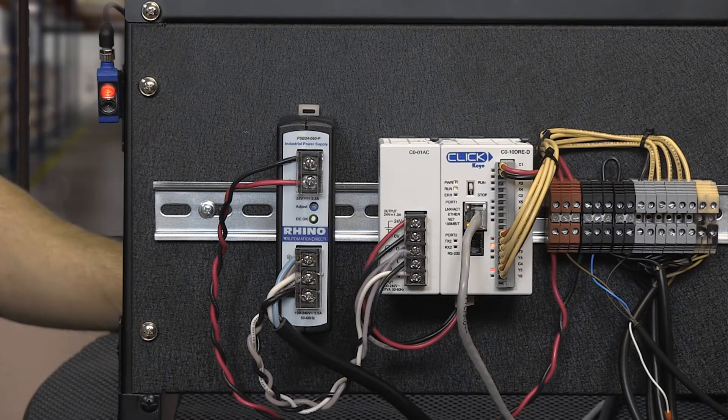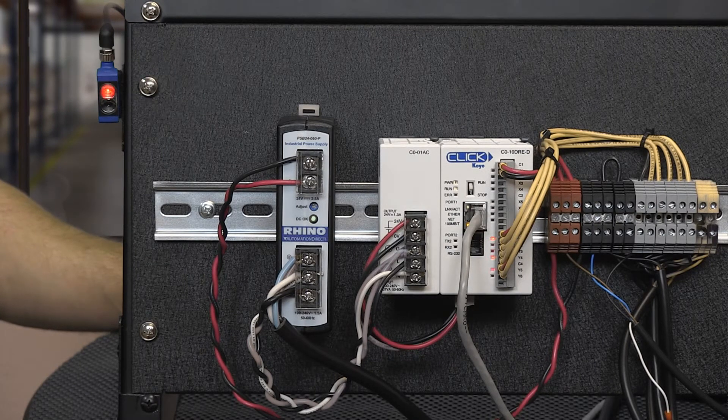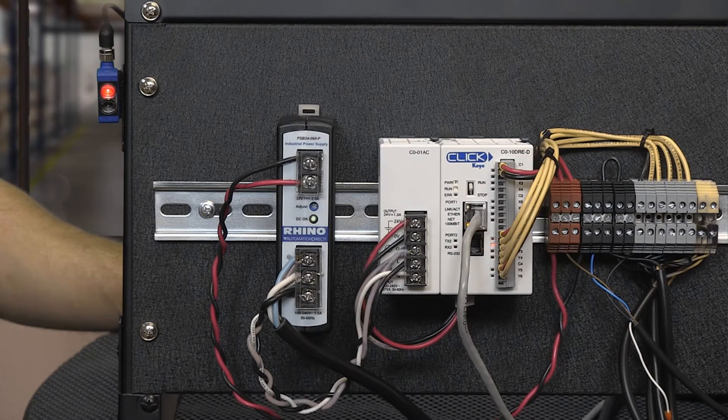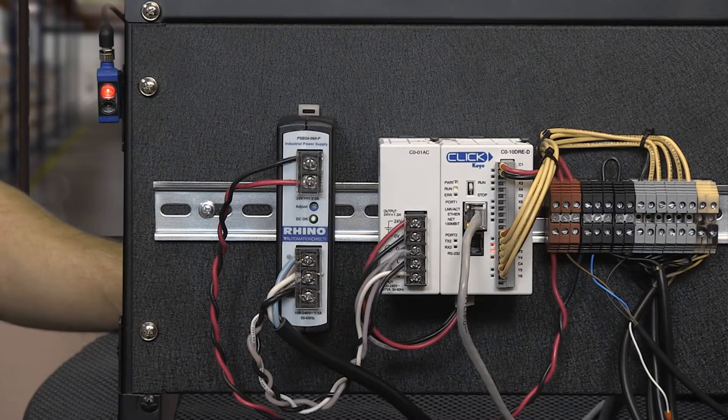A person walks by and trips a photo sensor telling the PLC to control up to four pneumatic valves. We can run all four valves and cylinders simultaneously or independently or in a timed sequence. It's all up to you. That's the wonderful thing about a PLC. You program it how you want it to control your devices.